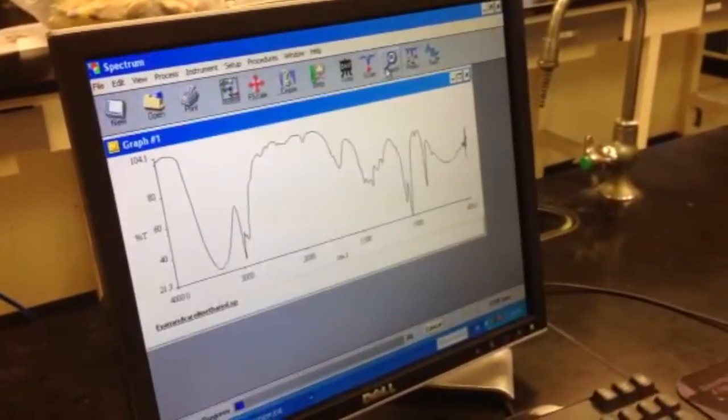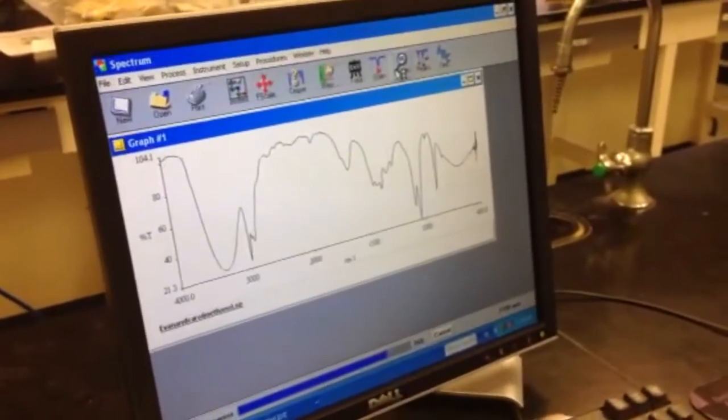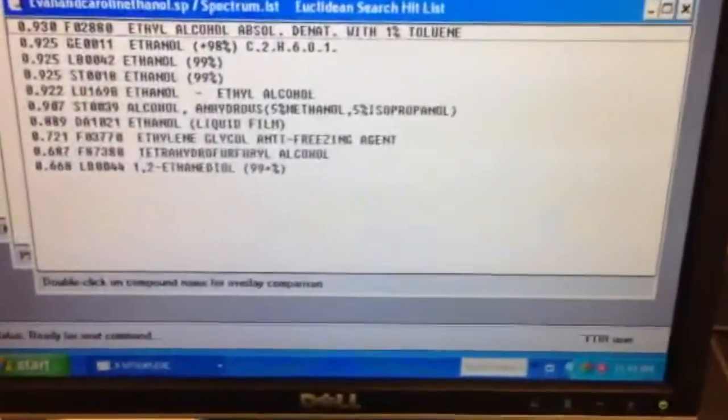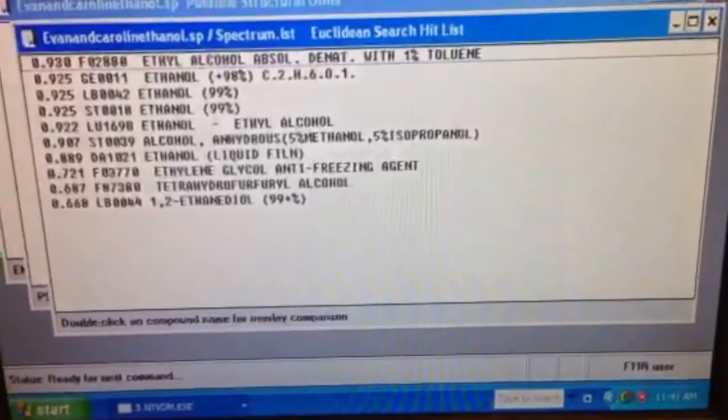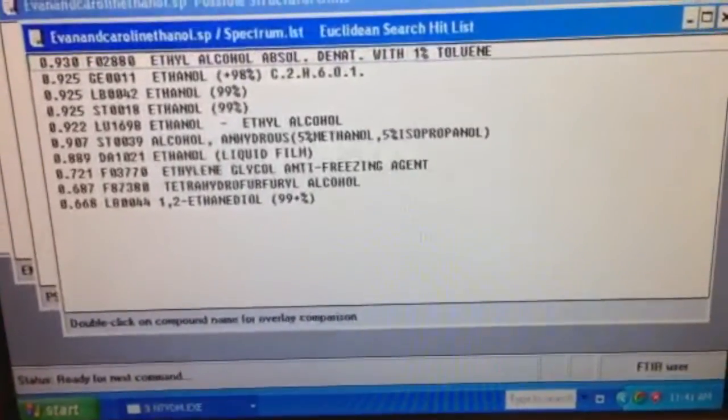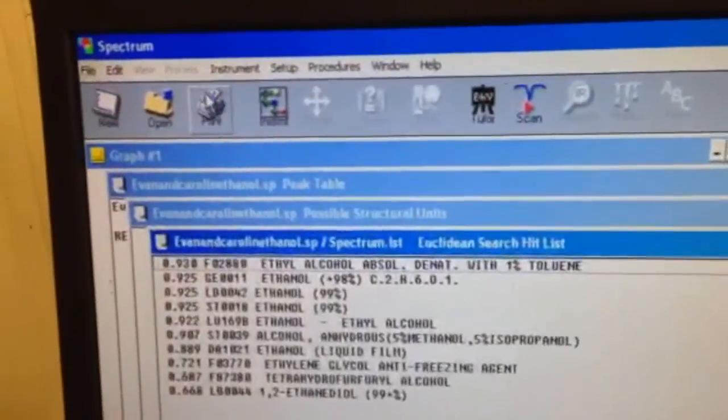It's sometimes hard to tell from the graph whether or not it's the product that you wanted, so you press search results, which is up in the top corner. When you press search results, it will pop up a little screen that has the names of certain things that are found in the product that you scanned. The number next to each substance represents the correlation of your graph to the actual accepted graph of that substance. The last thing you're going to want to do is print out your results and then log off of the computer.